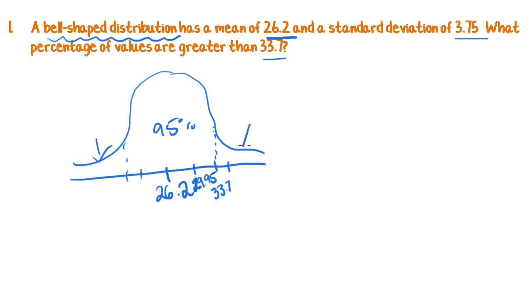which means in the two tails, with the 5% that's left over, it's split between these two, so there's 2.5% in each of these ends. So that means the percentage of data values greater than 33.7, the answer is 2.5%.